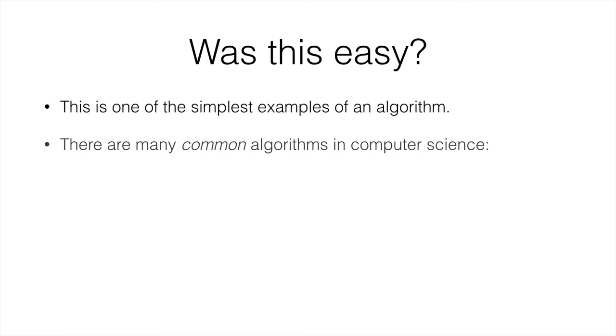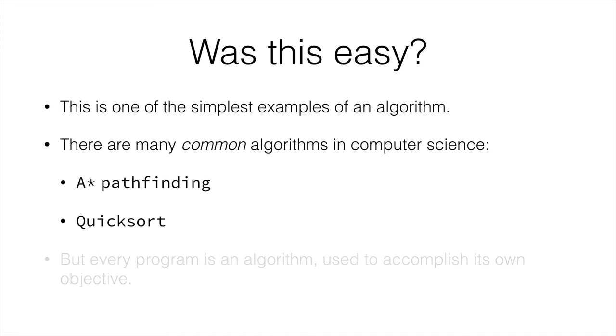Was this easy? I hope so. This is one of the simplest examples of an algorithm there is. There are many common algorithms in computer science to find out all sorts of things. For example, finding a path from one point to another. Or to sort a list of numbers in ascending or descending order.